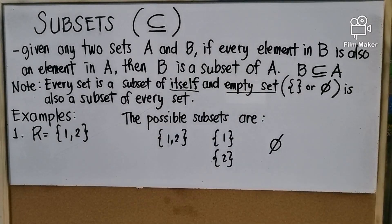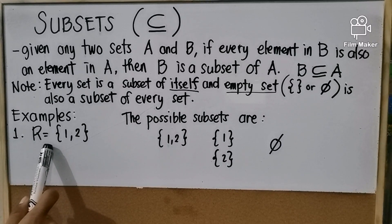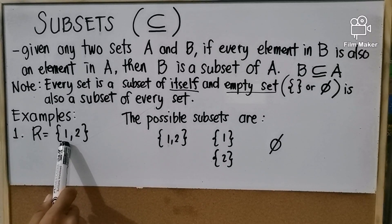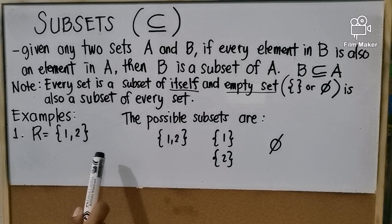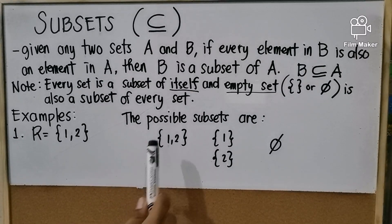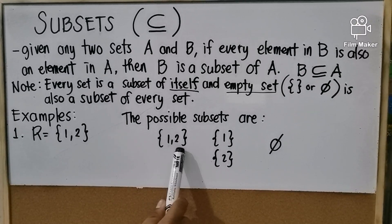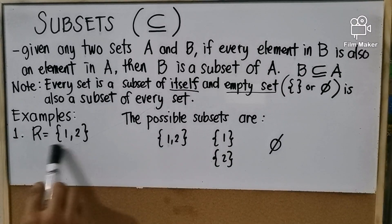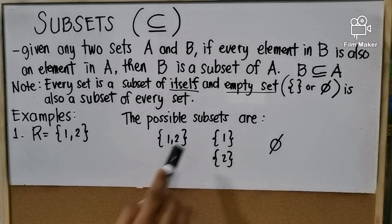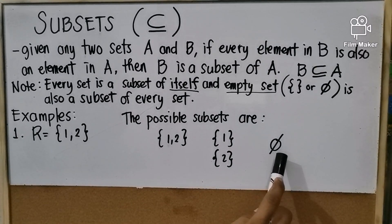For example, if R equals {1, 2}, then the possible subsets are: R itself, the set containing just 1, the set containing just 2, and the empty set.